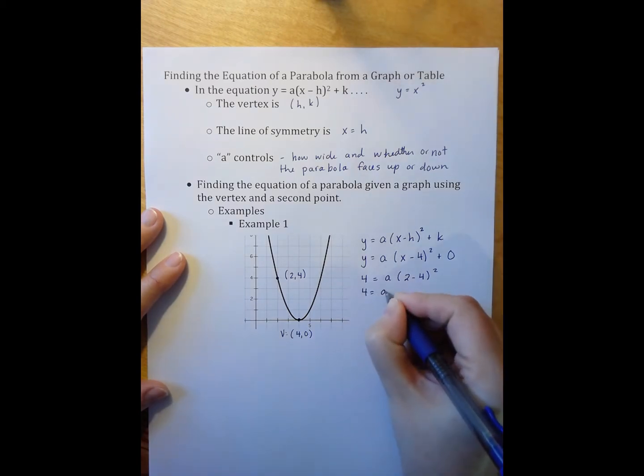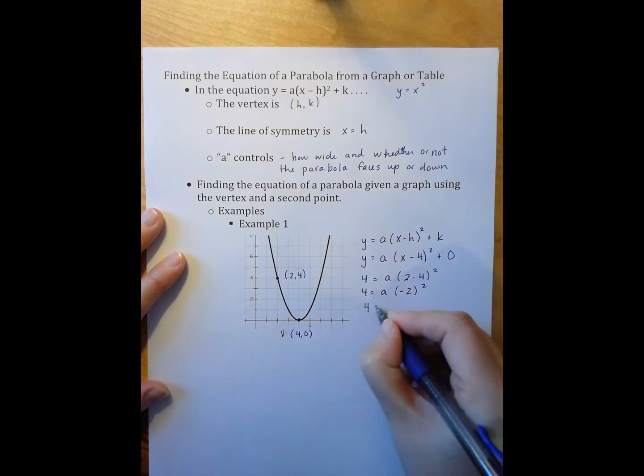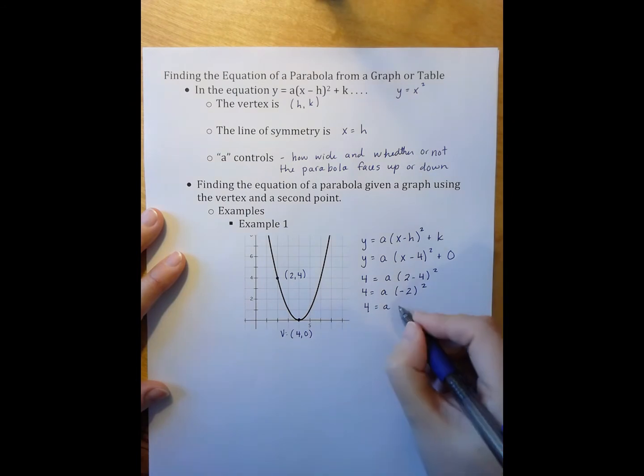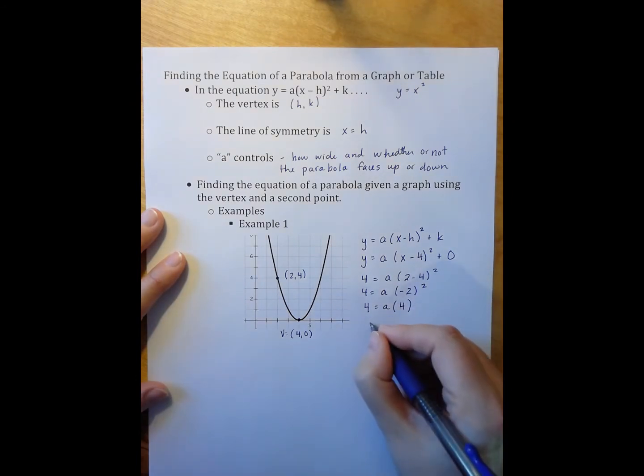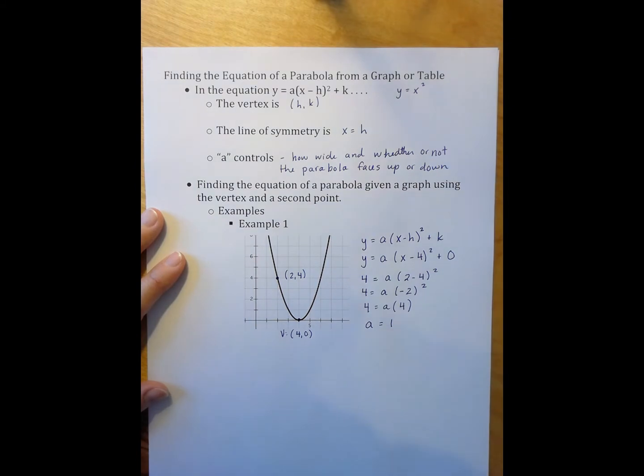So I have 4 equals a, 2 minus 4 is negative 2 quantity squared. Negative 2 quantity squared is 4, dividing by 4 on each side, I get that a equals 1.